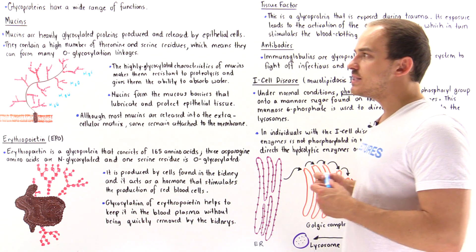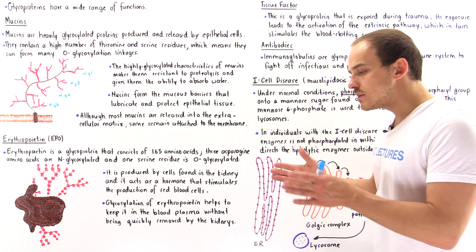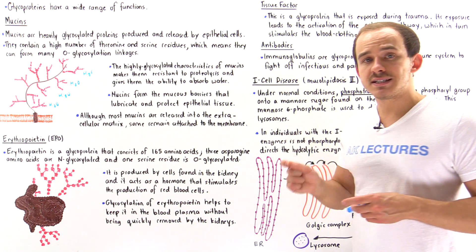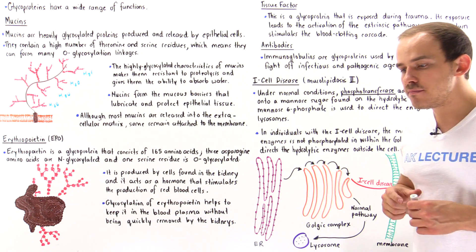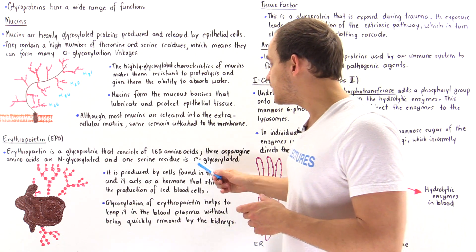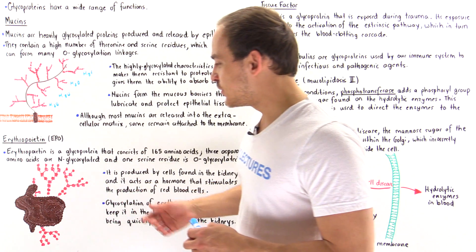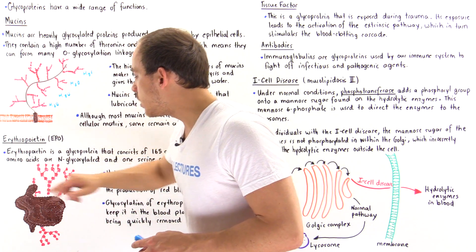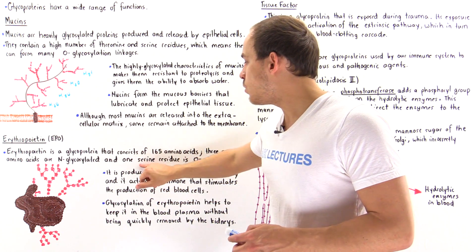Let's move on to the second type of glycoprotein: erythropoietin, or EPO. Erythropoietin is a glycoprotein whose protein component consists of an amino acid sequence of 165 amino acids, four of which are glycosylated. Three of these are asparagine amino acids, forming N-glycosidic bonds, and one is a serine amino acid, forming an O-glycosidic bond. The brown section — which looks somewhat like a bunny — is the protein component, and the four oligosaccharides are bound onto these four different amino acids: three asparagines and one serine.